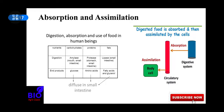After absorption, when our body cells take glucose, amino acids, fatty acids, and glycerol from the circulatory system and use them — for example, breaking them down to produce energy by respiration — that process is called assimilation. So assimilation is when the body cell takes these digested nutrients from the circulatory system and uses them. I hope you understood the difference between absorption and assimilation.